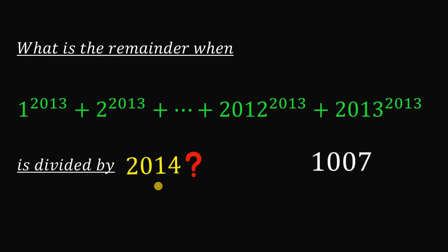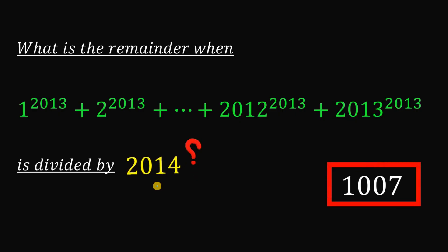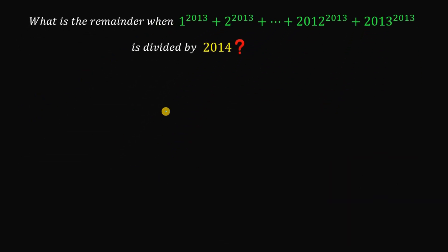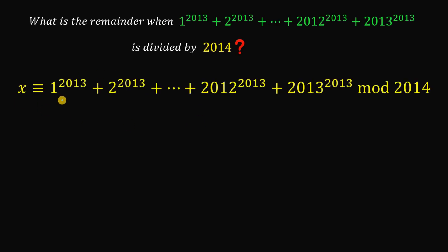The answer to this question is 1007. Now the question is how do we get 1007? For this question we will use the concept of modular arithmetic, so we can rewrite this question as: x is congruent to 1^2013 + 2^2013 + ... + 2013^2013 (mod 2014). What we're going to do is get the remainder when this number is divided by 2014.